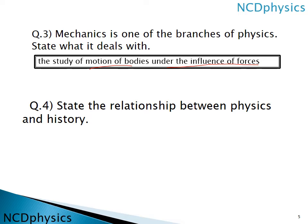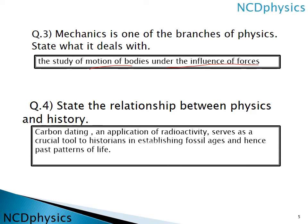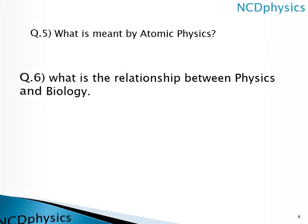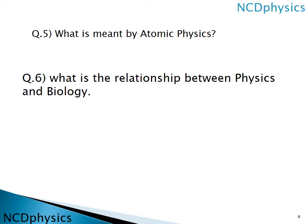The next question is: state the relationship between physics and history. In physics we can do carbon dating, which is an application of radioactivity. By using physics we can make physical fossil age experiments, by which we can come to know the age of objects.